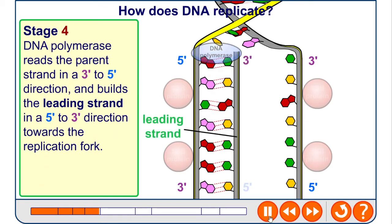DNA polymerase reads the parent strand in a 3' to 5' direction and builds what's called the leading strand in a 5' to 3' direction toward the replication fork. As it reads the bases, it adds complementary bases in, and because the strands are anti-parallel, they move in the 5' to 3' direction.